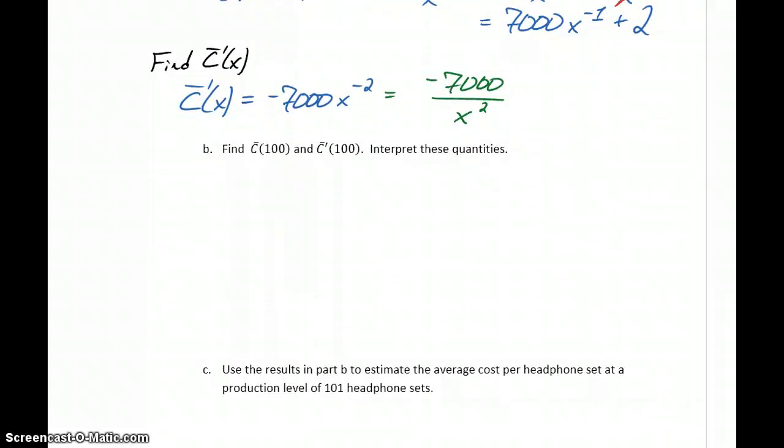In part B we want to calculate our average cost at a production level of 100 and our marginal average cost at a production level of 100. And we want to interpret both of those quantities.